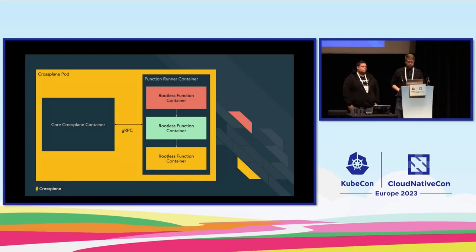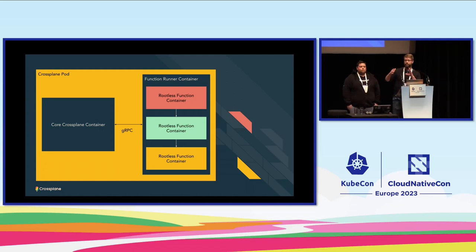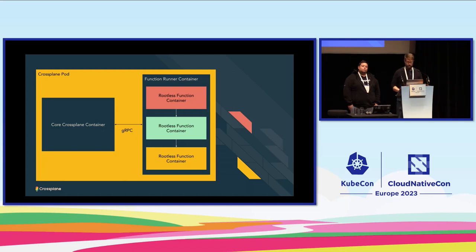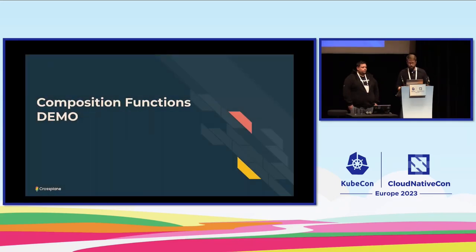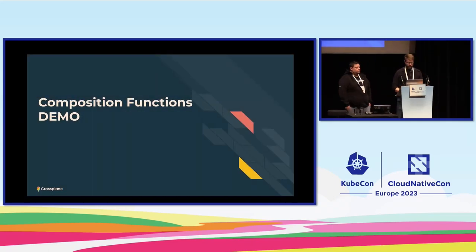A quick architecture overview: the whole thing runs as a sidecar container to the main Crossplane container inside the Crossplane pod. The main Crossplane container speaks over gRPC to the function runner container. Inside that, the default implementation of the Crossplane function runner invokes a set of rootless function containers to execute your code, passing them along in a pipeline, each continuing to manipulate the data.